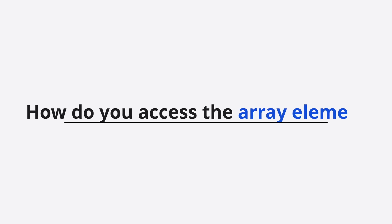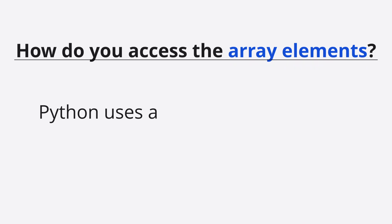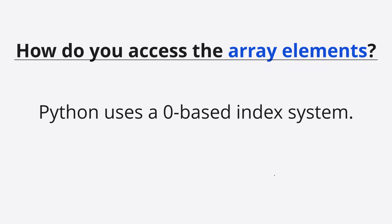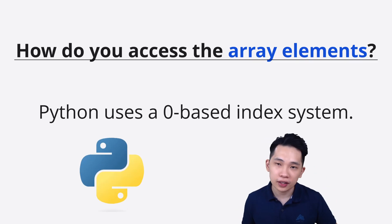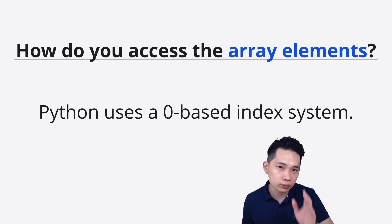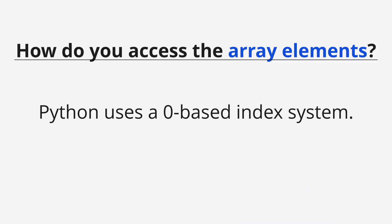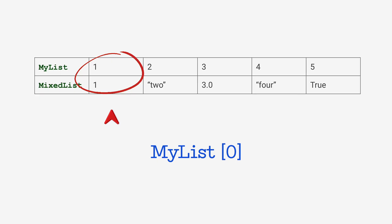After creating the array, how do you access the array elements? First of all, Python uses a 0-based index system. When you learn from paper 2, the index always starts from 1. But for Python, or most programming languages, the index always starts from 0. Access elements like so: my_list[0] will result in 1, which is the first element. When we type my_list[0], we are accessing the first element of the array.